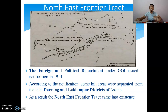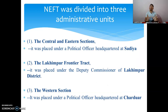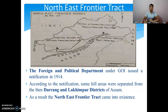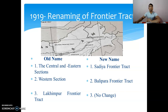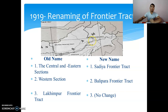The North East Frontier Tract was divided into three parts for administrative purposes: The Central and Eastern Section, The Lakhimpur Frontier Tract, and The Western Section. In 1919, these areas were renamed — the Central and Eastern Section became Sadiya Frontier Tract, the Western Section became Balipara Frontier Tract, and the Lakhimpur Frontier Tract name remained unchanged. As you can see on the map: Balipara Frontier Tract, Sadiya Frontier Tract, and Lakhimpur Frontier Tract.